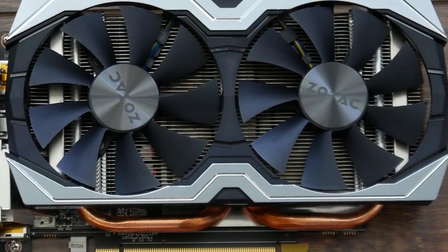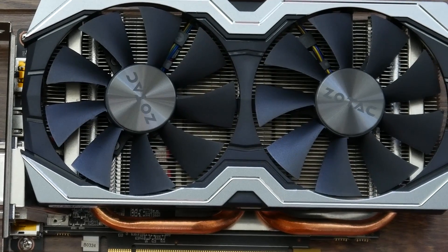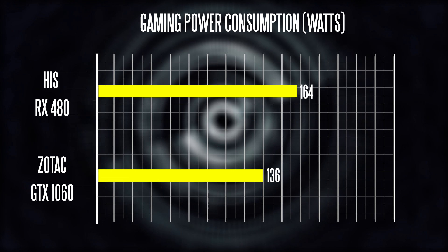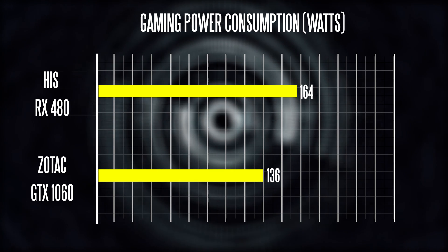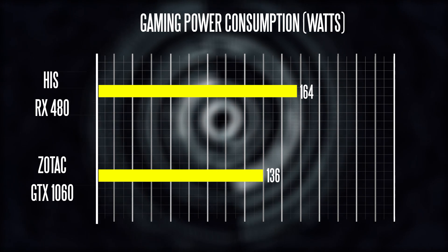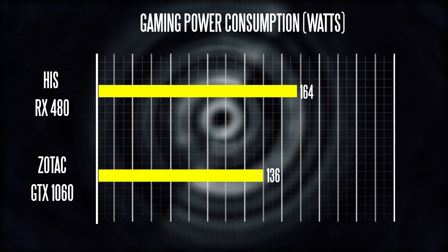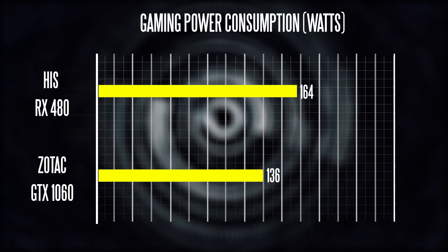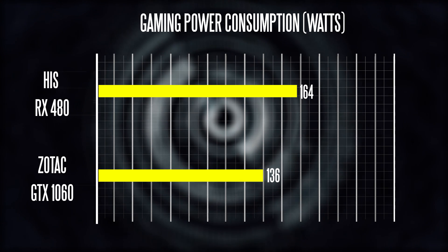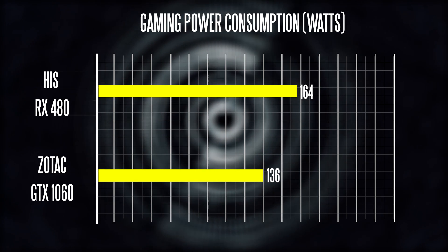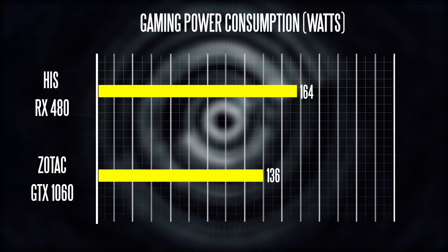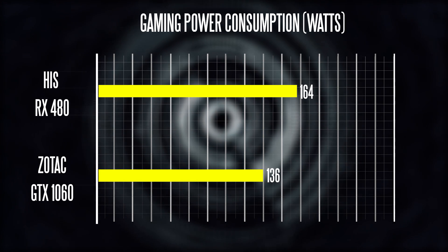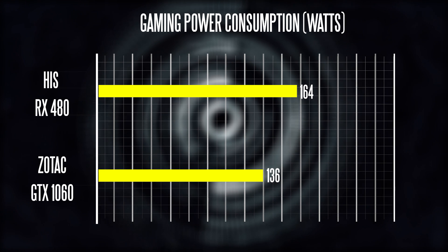The first thing I want to look at is overall power consumption. With the new drivers on the AMD side, efficiency levels have definitely gone up from the initial launch of the RX 480. At full gaming load the card draws about 164 watts on average, versus the 1060 which draws about 136 watts in the exact same settings — so give or take 25 to 30 watts difference. It's not going to make a big real-world difference, but the 1060 is certainly more efficient.